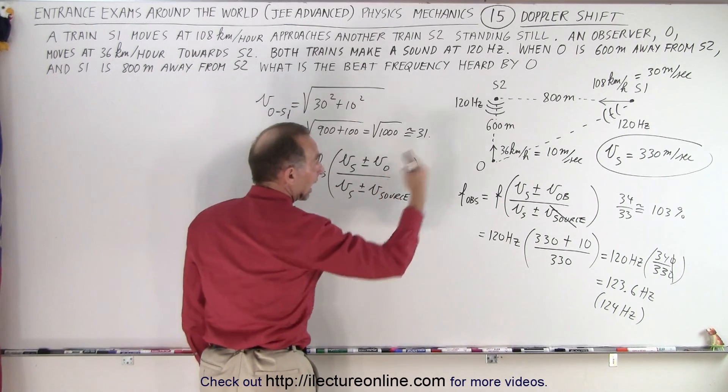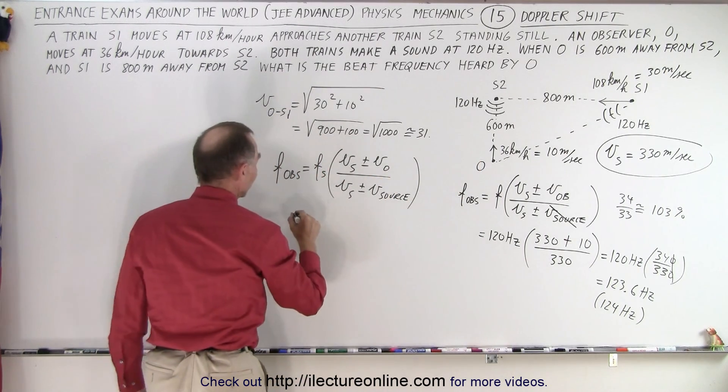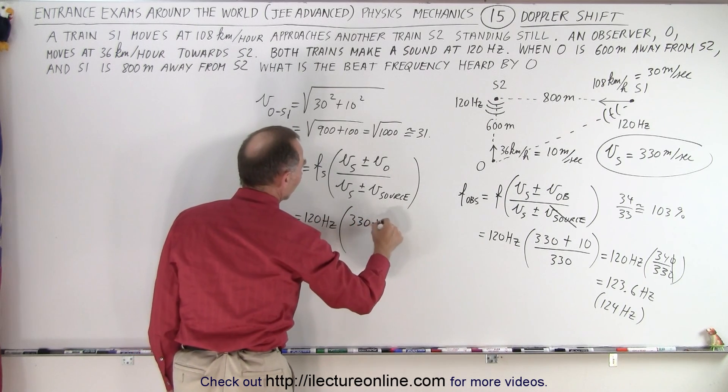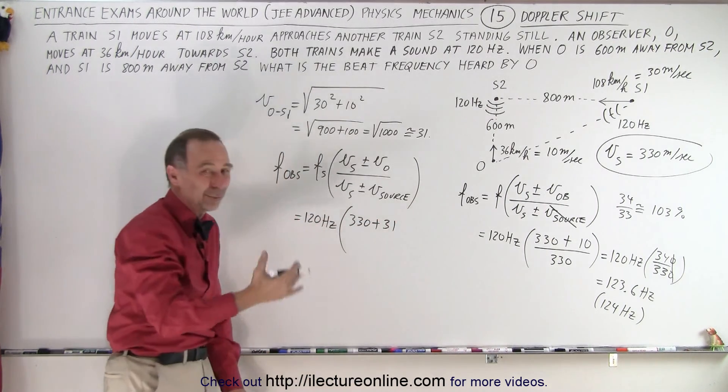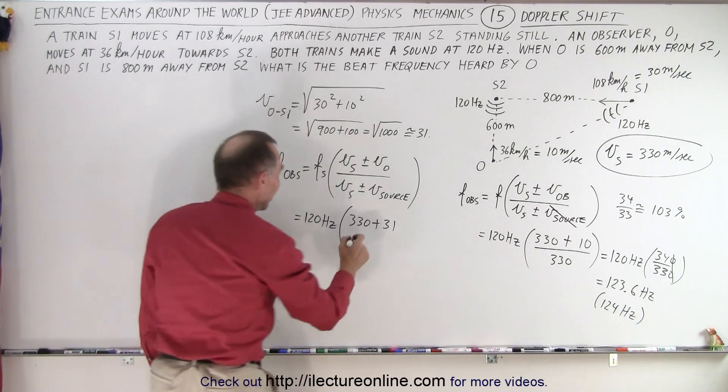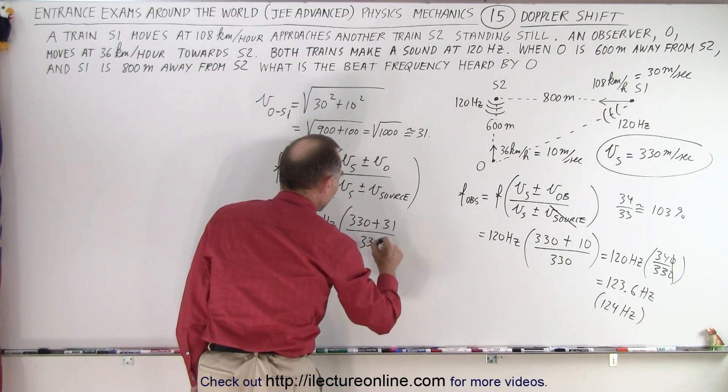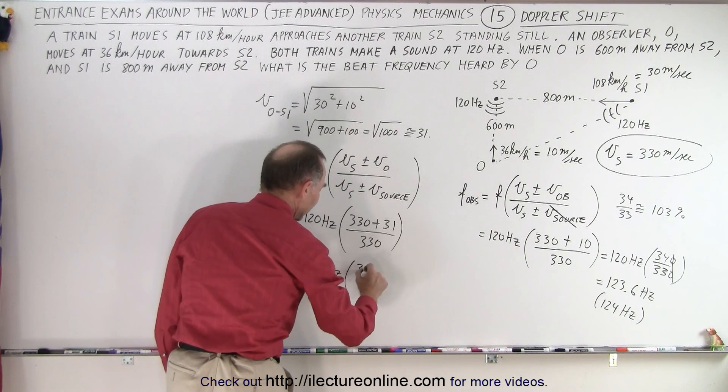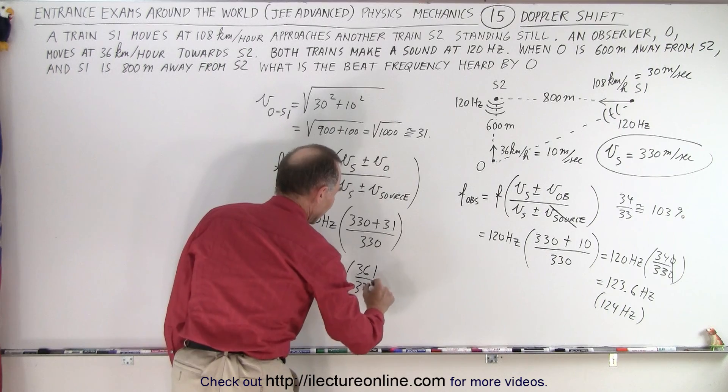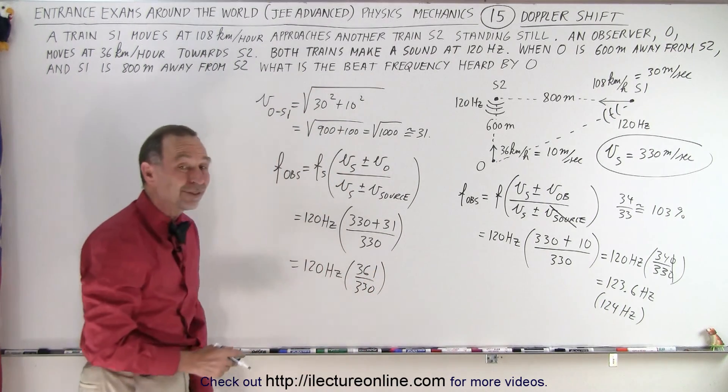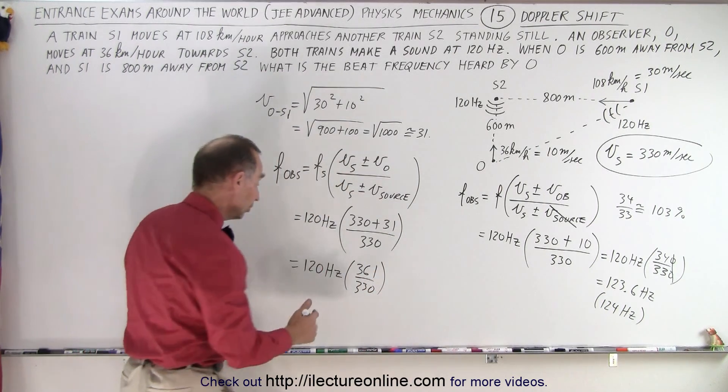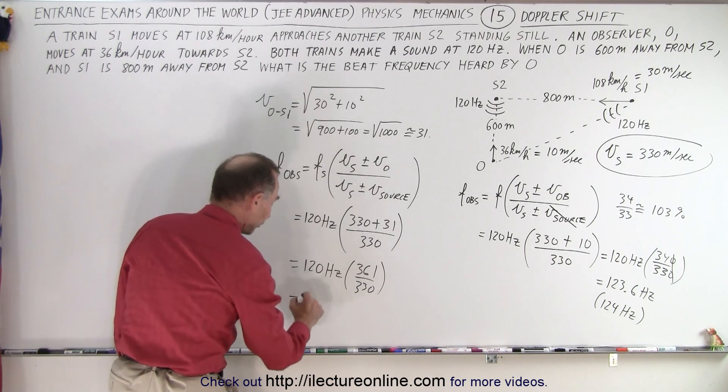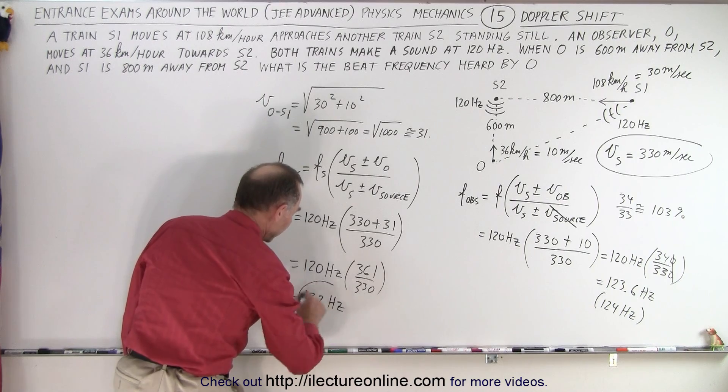Again, we hear a higher frequency, so this should be a plus. So that's 120 hertz times 330 plus 31. So who cares, 31, 31.3, something like that, divided by 330. So roughly speaking, that's 120 hertz times 361 over 330. And notice that's about a 10% increase. So that would be equal to 10% of 120 hertz is 12 hertz or 132 hertz, approximately.